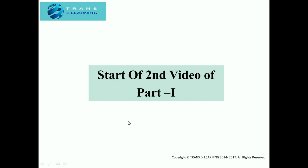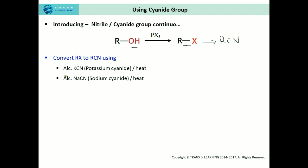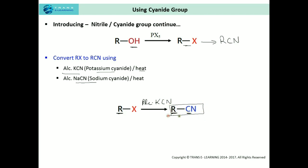This second video of part one begins with the conversion of alkyl halide into alkyl nitrile using alcoholic potassium cyanide or sodium cyanide with heating. Here we have one alkyl group with one carbon atom, and after the reaction another carbon atom is introduced. This is known as ascent of series, because the product contains one more carbon atom than the parent alkyl halide.